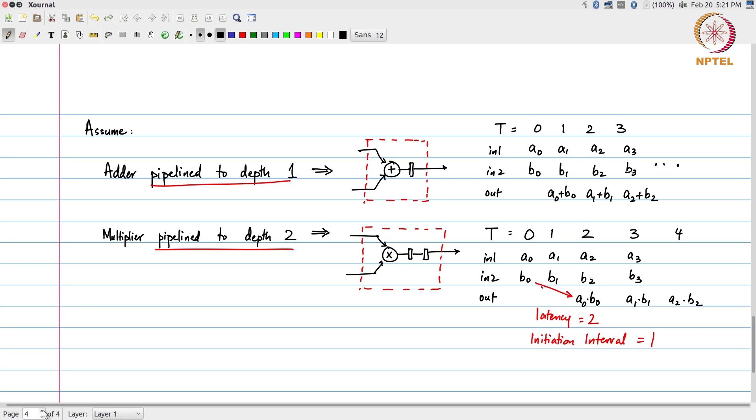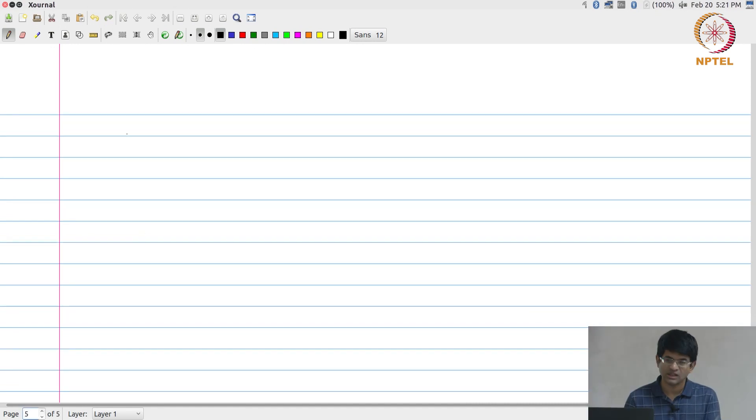With this in place, what we now need to do is, supposing I have two edges in my data flow graph like this. I will associate a value, a number, with the execution of each node. Let me call this i and this one j.